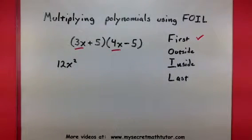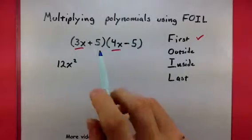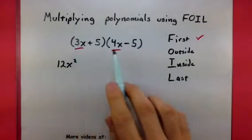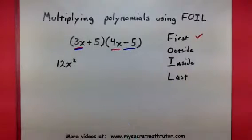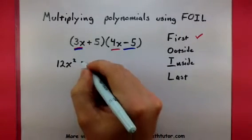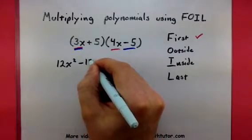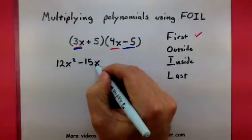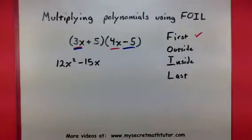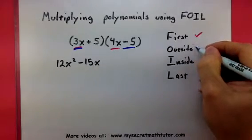Now I want to take care of my outside terms. The outside terms will be the 3x and this minus 5. Multiplying these two together, 3 times negative 5 would be negative 15. And since this one has an x, it's negative 15x.